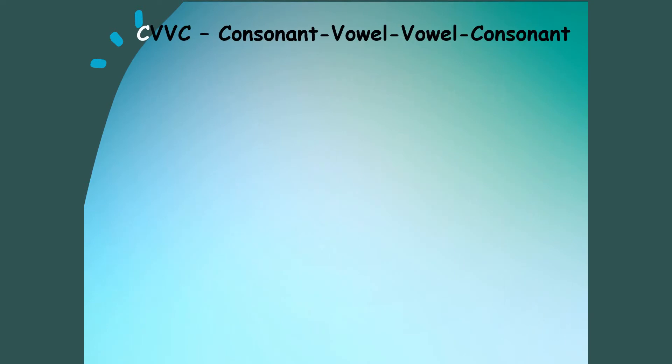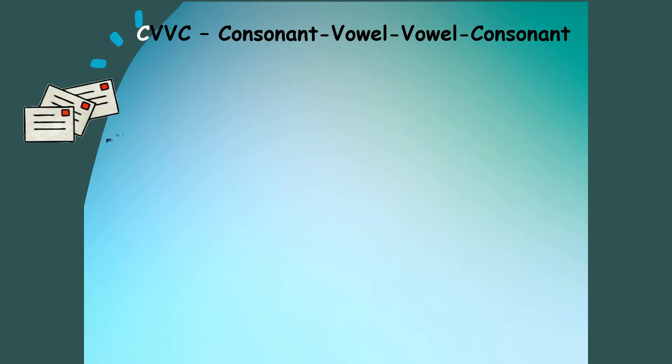The first word pattern we are going to discuss is the CVVC, or the consonant-vowel-vowel-consonant word pattern. This word pattern usually follows the rule: when two vowels go walking, the first one does the talking. This means the first vowel will be sounded while the second vowel will remain silent. Examples are: Soap,